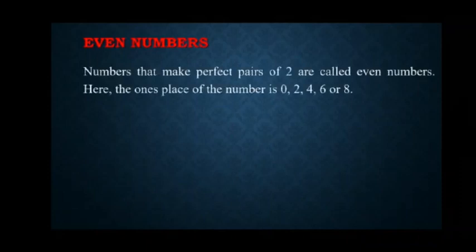Now, let's discuss about even numbers. Numbers that make perfect pairs of 2 are called even numbers. And the 1's place of the even number is 0, 2, 4, 6 or 8.